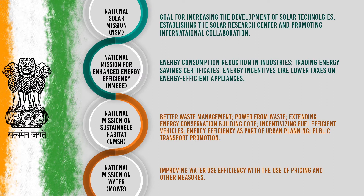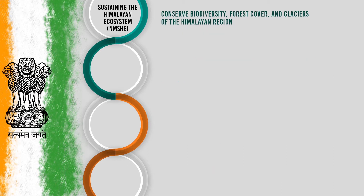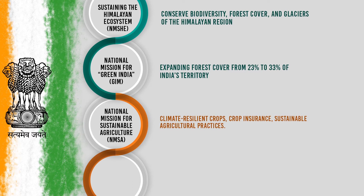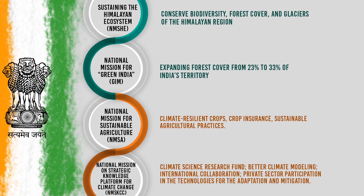Further NAPCC missions include: the National Water Mission — improving water use efficiency through pricing and other measures; the National Mission for Sustaining the Himalayan Ecosystem — conserving the biodiversity, forest cover and glaciers of the Himalayan region; the National Mission for Green India — expanding forest cover from 23% to 33% of India's territory; the National Mission for Sustainable Agriculture — climate resilient crops, crop insurance, and sustainable agricultural practices; and the National Mission on Strategic Knowledge Platform for Climate Change — climate science research, better climatic modelling, international collaboration, and private sector participation in technologies for adaptation and mitigation.